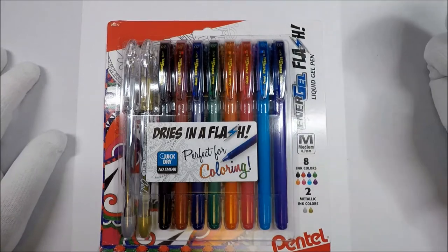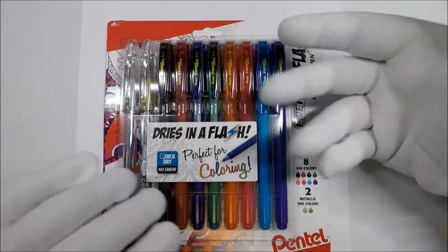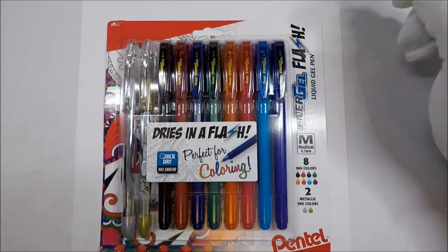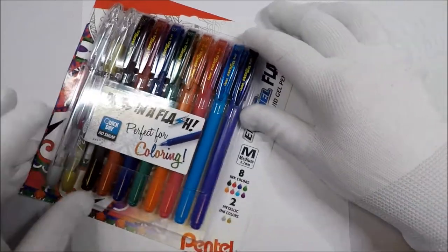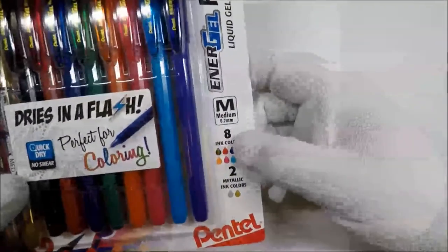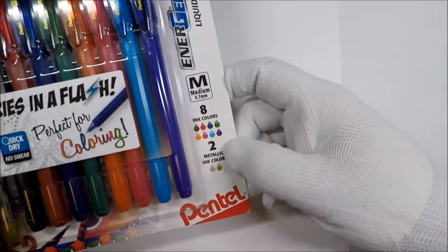I'll include a link in the description if you want to check them out. So this has eight colors and then two metallic colors. These are medium points, 0.7 millimeters, and we get eight colors and two metallic colors, which should be interesting.